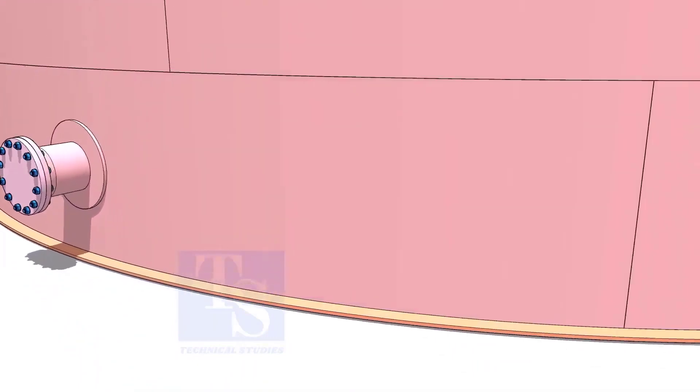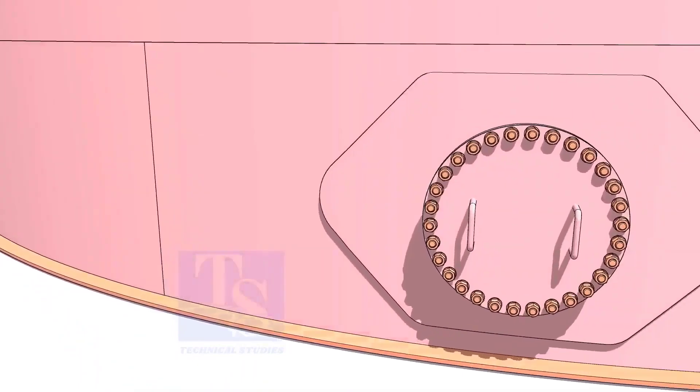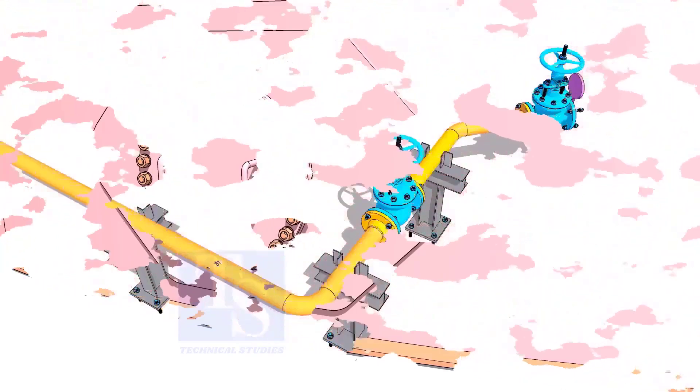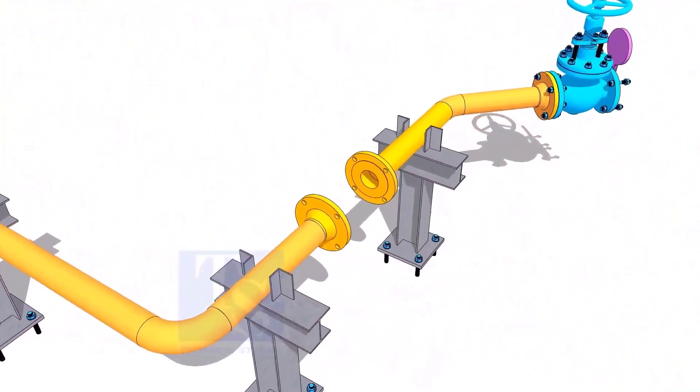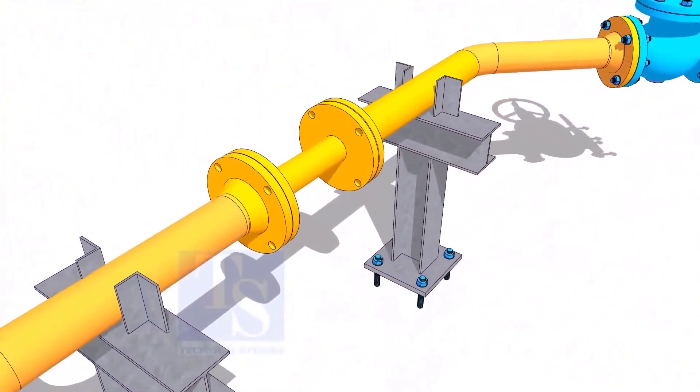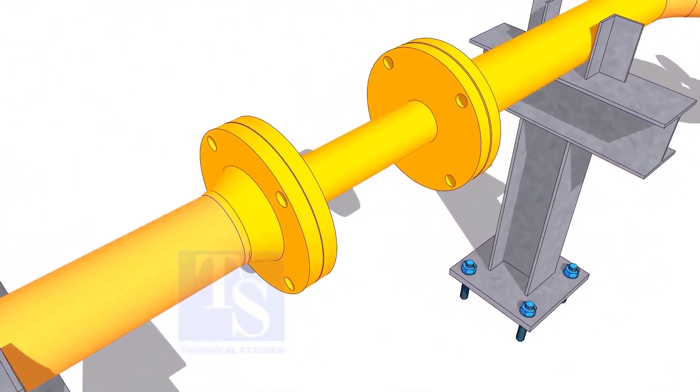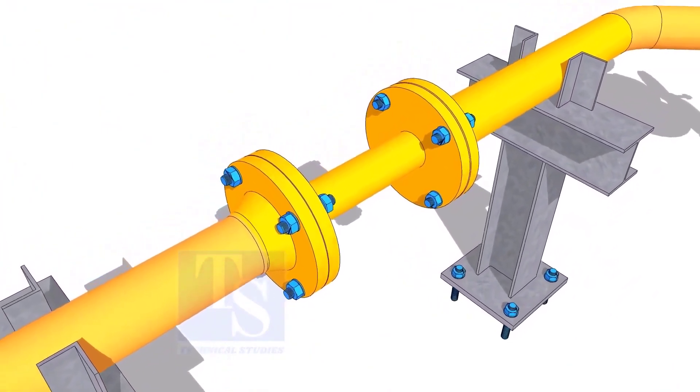Plate flanges are used for low-pressure services or to blind the nozzles of vessels, tanks, etc. for hydrotest purposes. Other use of plate flange is making temporary spools to replace valves and equipment on a piping system.